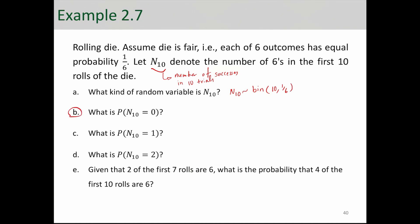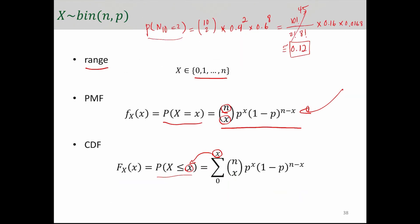Part B is asking for probability of n10 equals 0. What that means is what's the probability of 0 successes in 10 rolls of this die? 10 choose 0, 1/6 to 0, 5/6 to 10. And here I'm just following the PMF formula to calculate this probability.